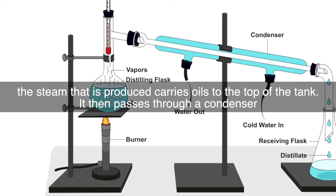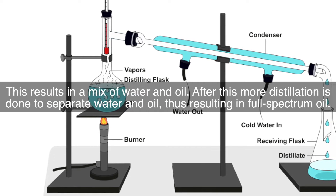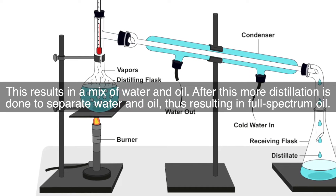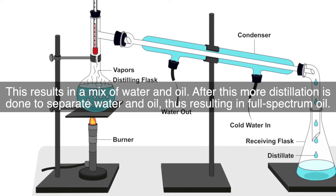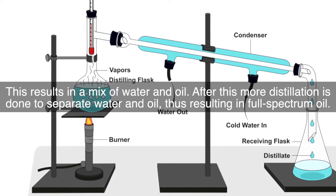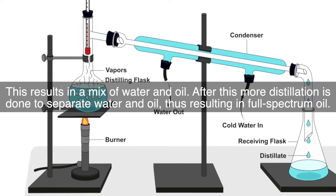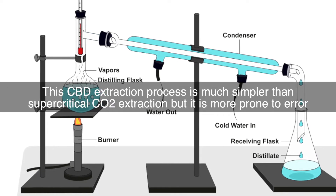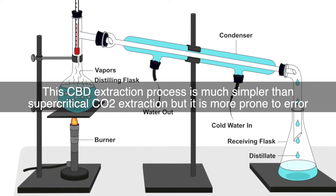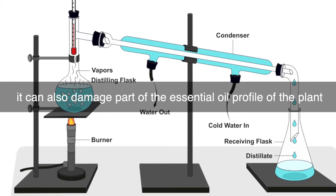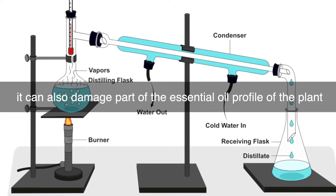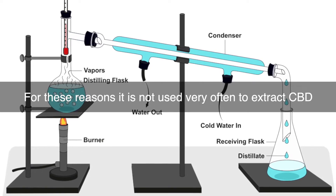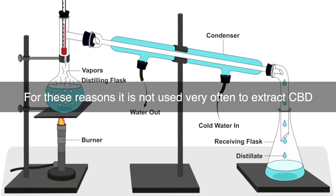The steam then passes through a condenser, resulting in a mix of water and oil. After this, more distillation is done to separate the water and oil, resulting in full spectrum oil. This CBD extraction process is much simpler than supercritical CO2 extraction but is more prone to error and can also damage part of the essential oil profile of the plant. For these reasons, it is not used very often to extract CBD.